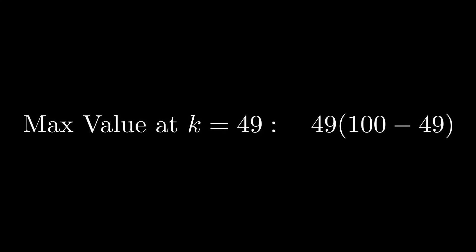Let's actually calculate this maximum. We need 49 times 100 minus 49, which is just 49 times 51. And here's a nice trick: we can use the difference of squares formula. 49 is 50 minus 1, 51 is 50 plus 1, so this equals 50 squared minus 1 squared.